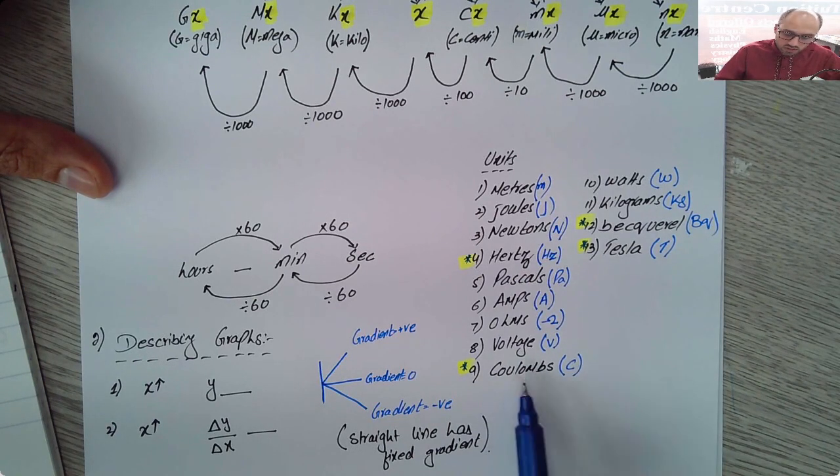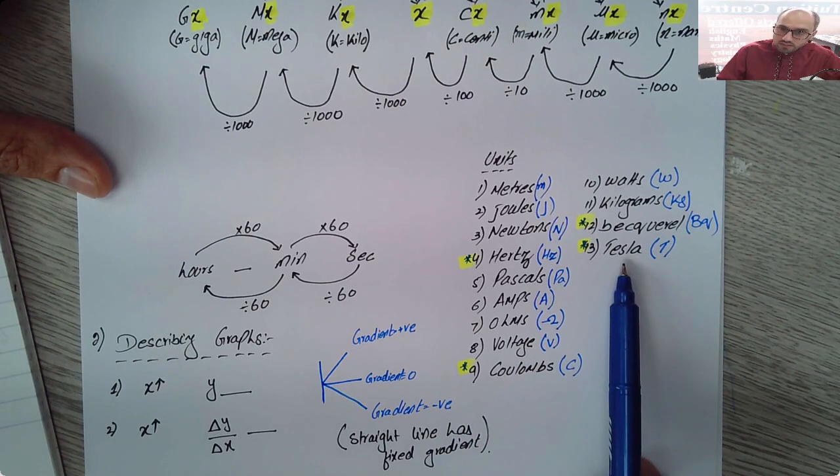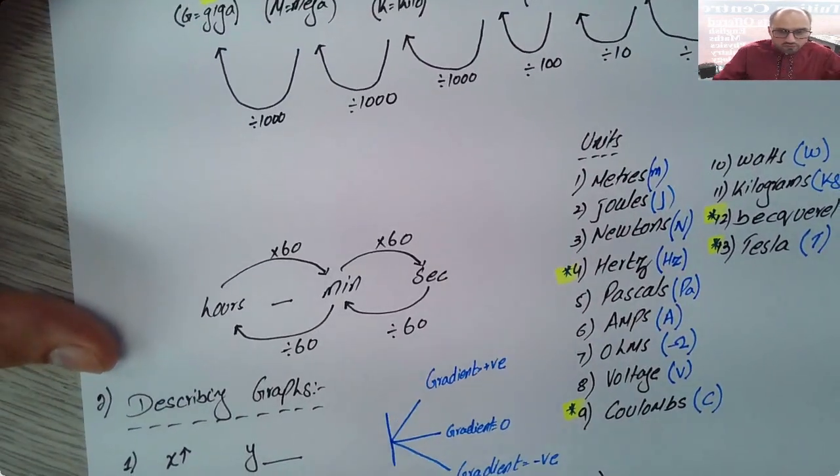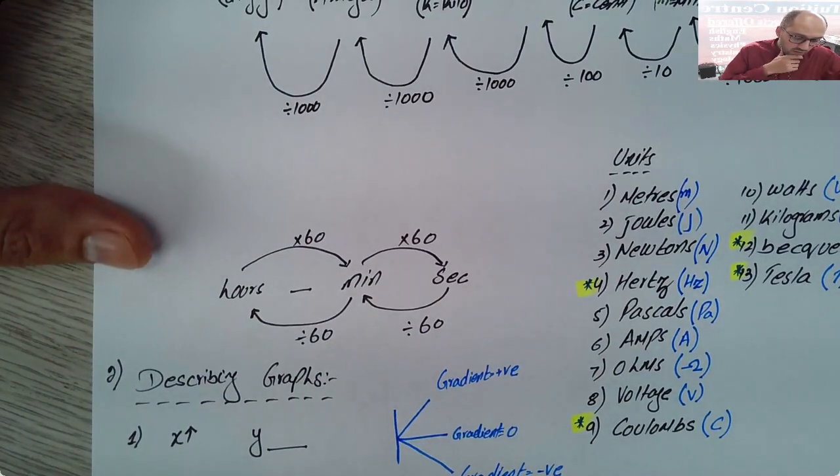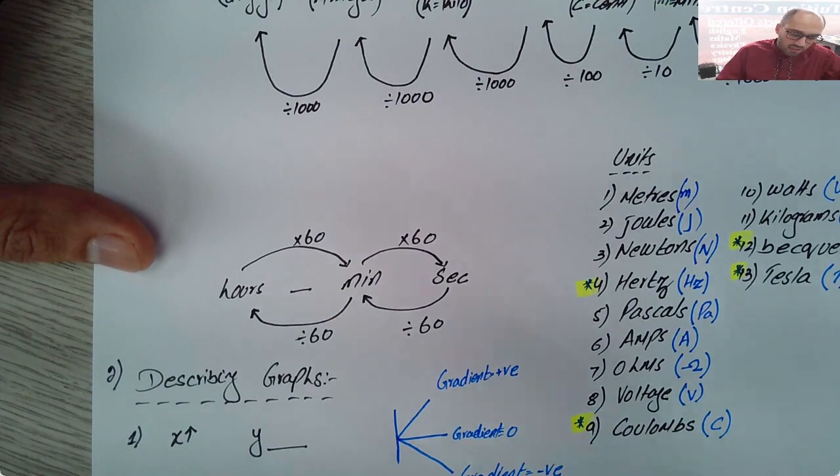bq is for the activity and tesla is for magnetic field. There's another diagram for unit conversion and this is only for time. So if you need to convert hours into minutes you'll multiply that by 60 and so on.